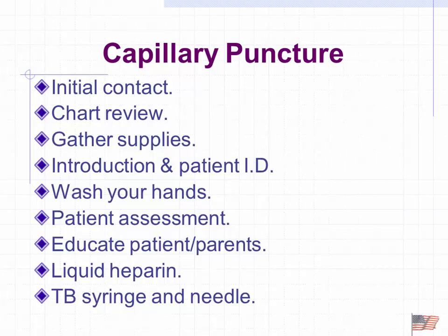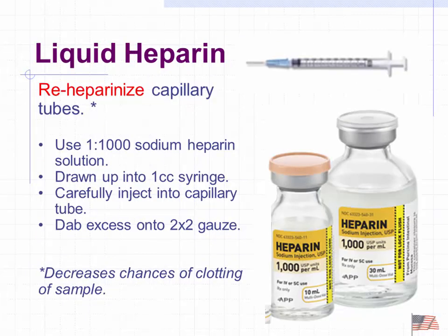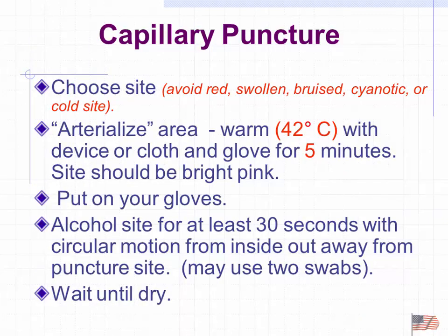For the procedure: review the chart, gather supplies, and introduce yourself — typically to mom and dad since they're usually present. Wash your hands and perform a patient assessment. If the device isn't heparinized, draw up a 1 to 1,000 sodium heparin solution, just like with an arterial sample, to heparinize the capillary tube. The devices we use are already heparinized, so it's not an issue.